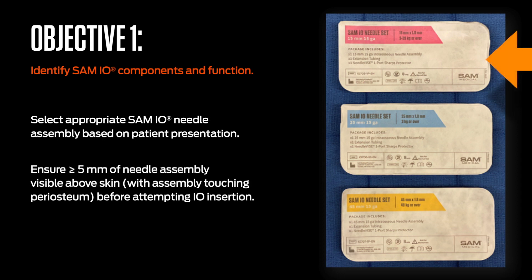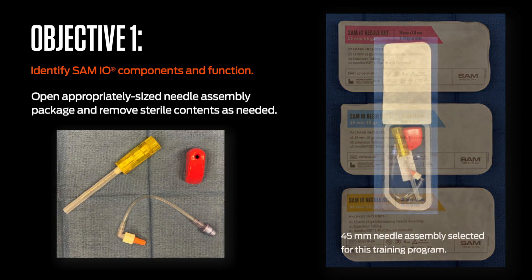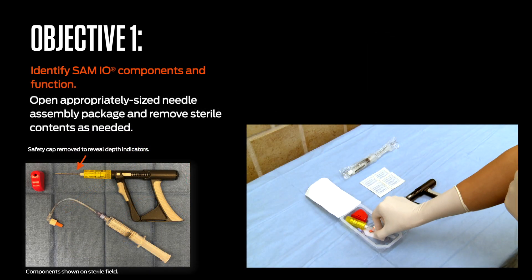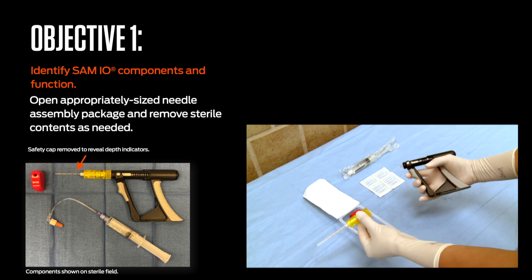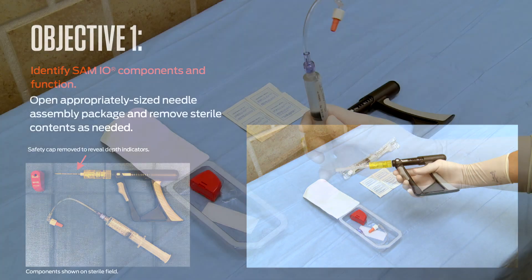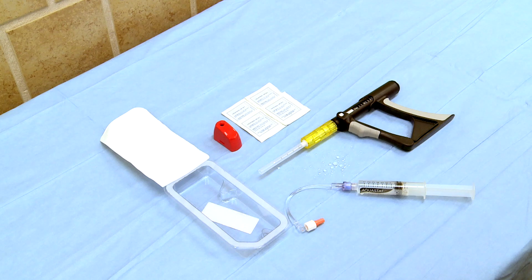The 15-millimeter needle assembly is suggested for patients with non-existent to limited overlying adipose tissue. The 25-millimeter needle assembly is suggested for patients with minimal to moderate overlying adipose tissue. The 45-millimeter needle assembly is suggested for patients with moderate to excessive overlying tissues. Contents of the SAM-IO package include one needle assembly, one extension set, and one needle vise. Note that the needle assembly has been attached to the driver, the safety cap removed to reveal the depth indicators, the extension set primed with saline, and the needle vise positioned for stylet retrieval.